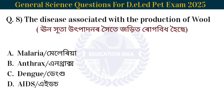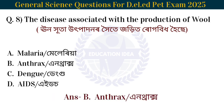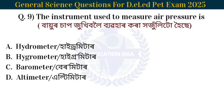Next question: What disease is associated with the production of wool? The answer is anthrax. The disease associated with wool production is anthrax.